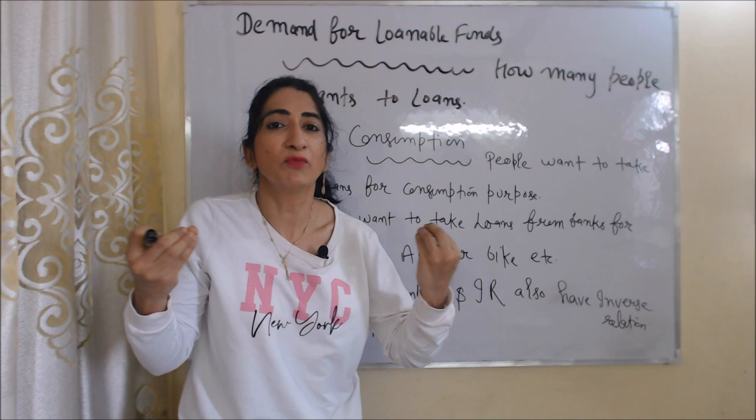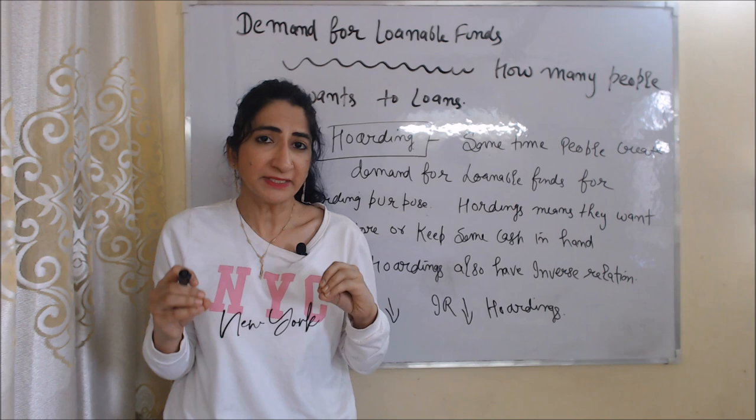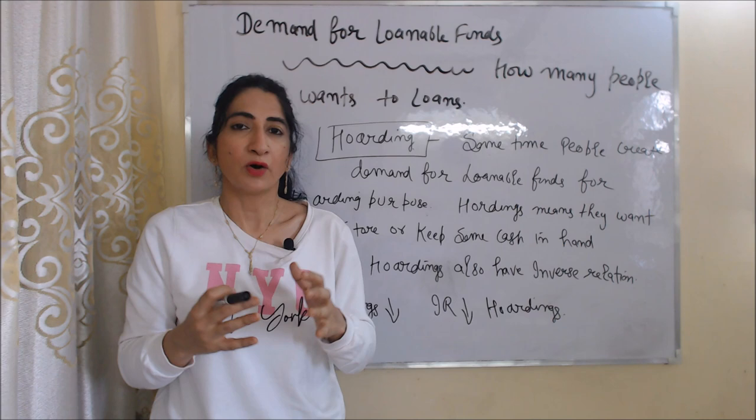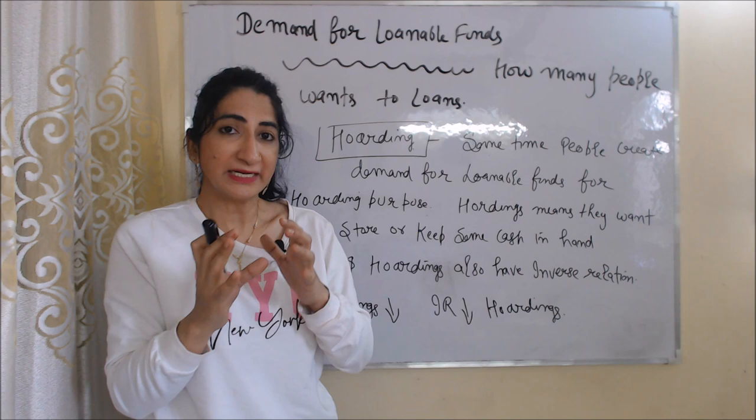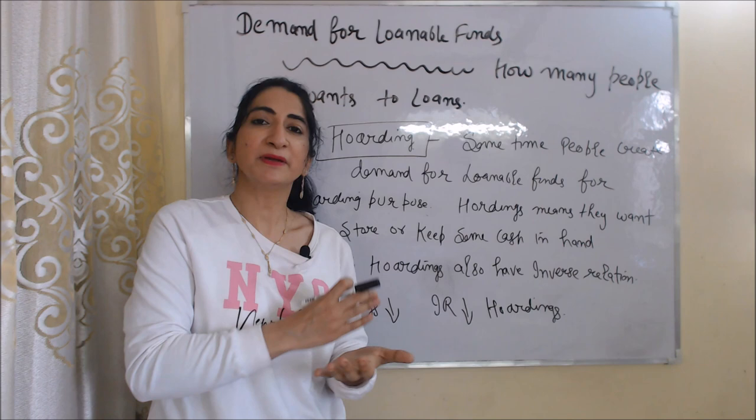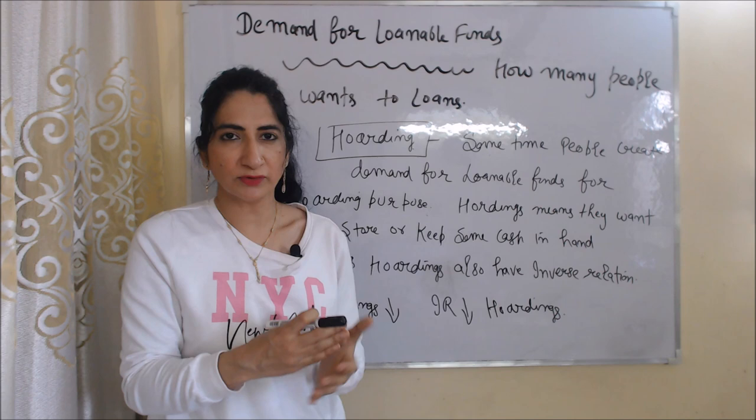The next factor is hoarding. Sometimes people create demand for loanable funds for hoarding purposes. Hoarding means they want to store money or keep some cash in hand. Interest rate and hoarding also have an inverse relation. When interest rate is high, people want to hoard less money. On the other hand, if interest rate is low, people want to hold more money.